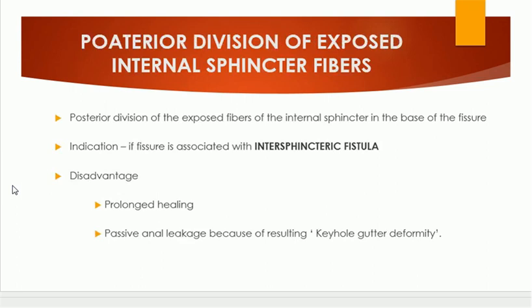Another surgical option is to divide the internal sphincter at the base of the fissure in the posterior midline, where internal sphincter fibers are usually visible. This posterior division of the exposed fibers of the internal sphincter is called posterior midline sphincterotomy. The indication is if the fissure is associated with an inter-sphincteric fistula.